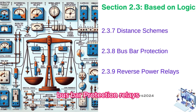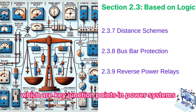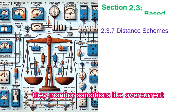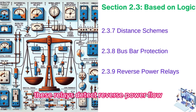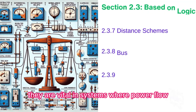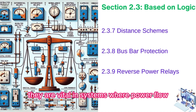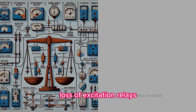Busbar protection relays are specialized devices designed to safeguard busbars, which are key junction points in power systems. They monitor conditions like overcurrent and short circuits specific to busbar configurations. Reverse power relays detect reverse power flow, which can indicate issues like generator failure. They are vital in systems where power flow directionality ensures operational stability.